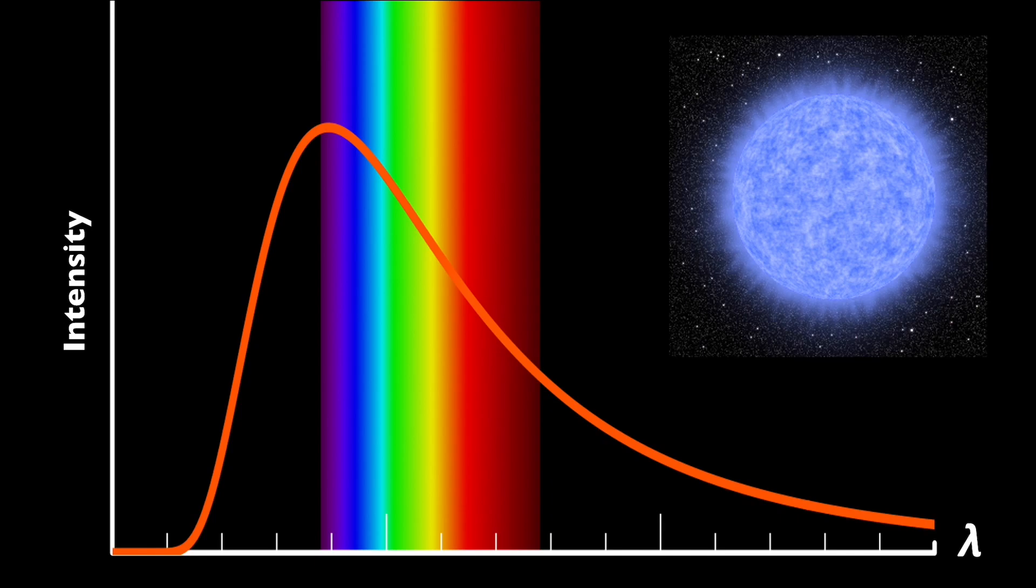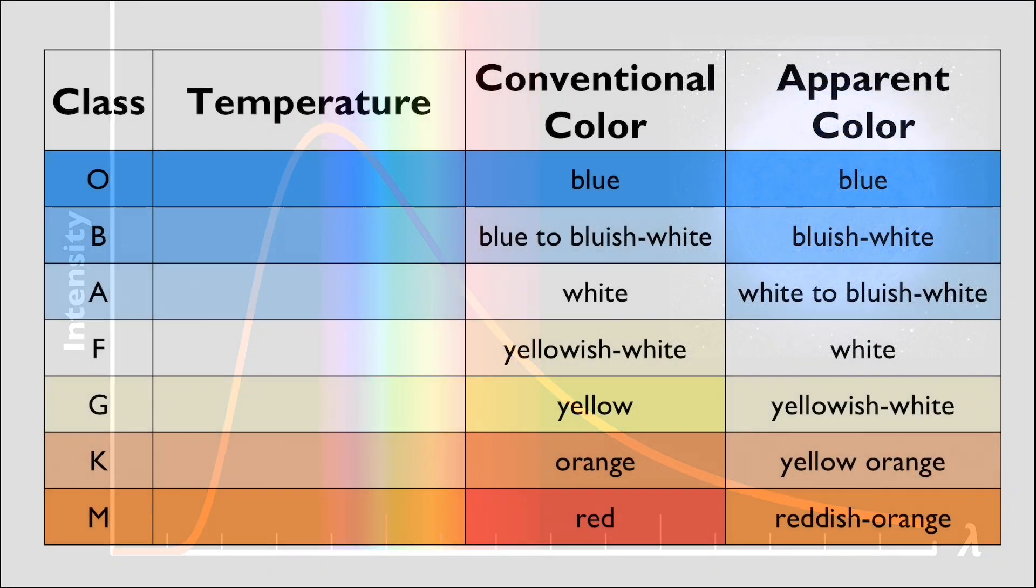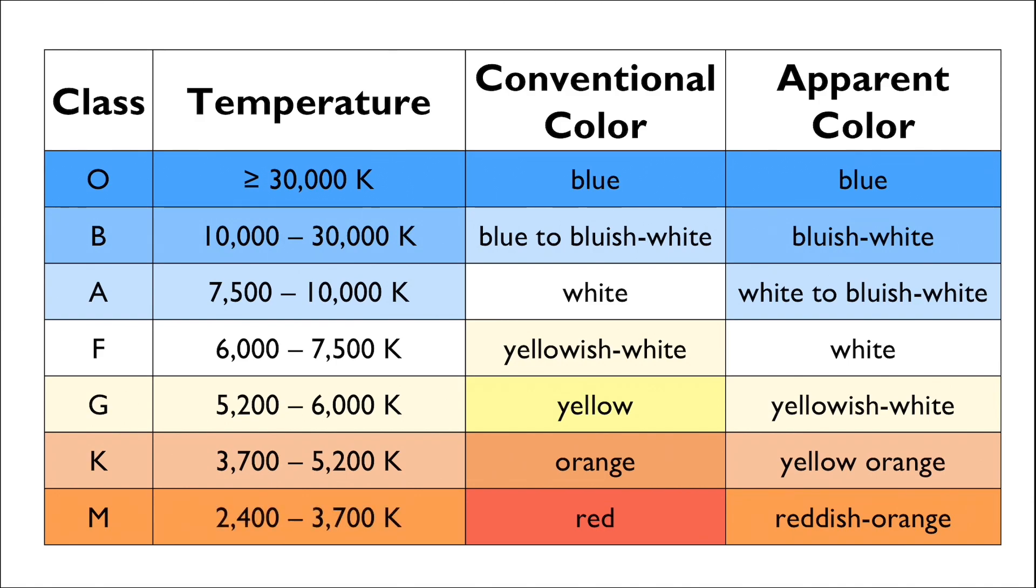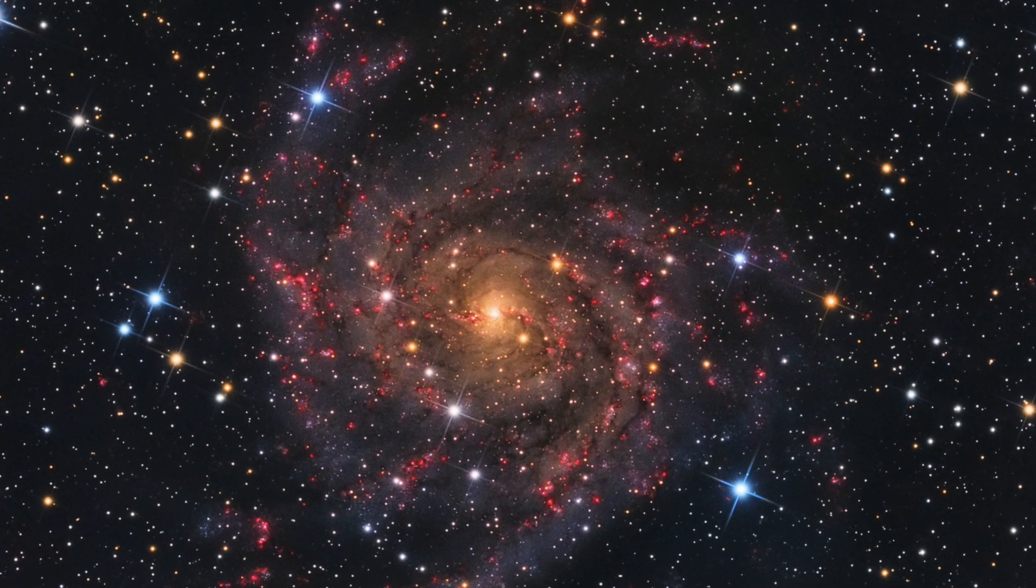We began this video with the statement that the colors of the stars depend on their temperatures. These are the temperatures associated with the stars of the stated colors. The conventional color dictates the color of the star according to Wien's law, meaning the peak wavelength of the star's spectrum determines the color of the star. But the apparent color is what we actually see. And what we see depends on our eyes.